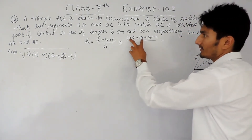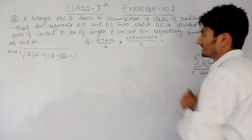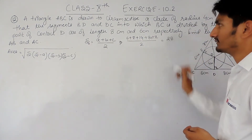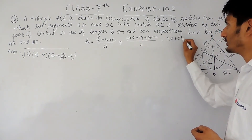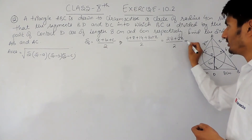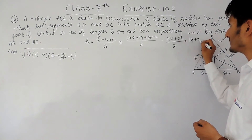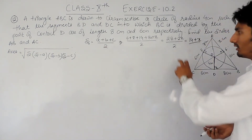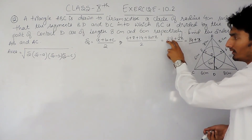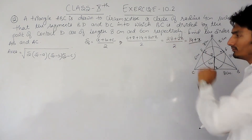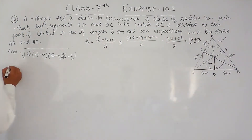The three sides of the triangle are: BC = 8+6 = 14 cm, AB = 8+x cm, and AC = 6+x cm. The perimeter is 14 + (8+x) + (6+x) = 28 + 2x. Dividing by 2, the semi-perimeter S = 14 + x.